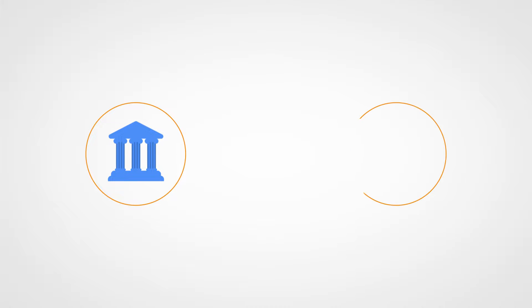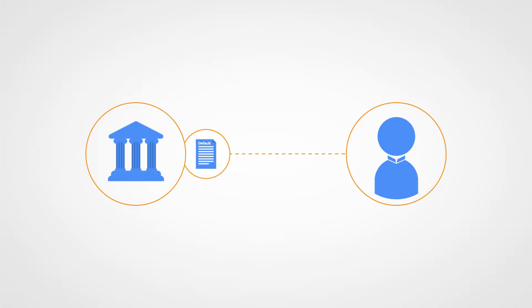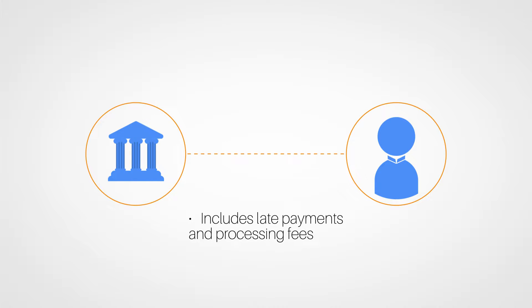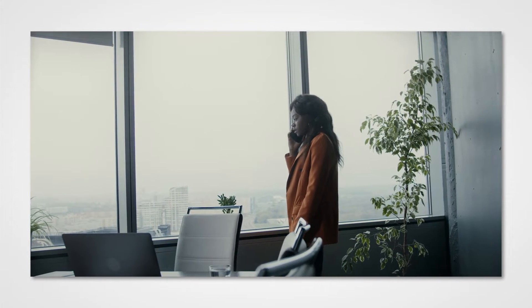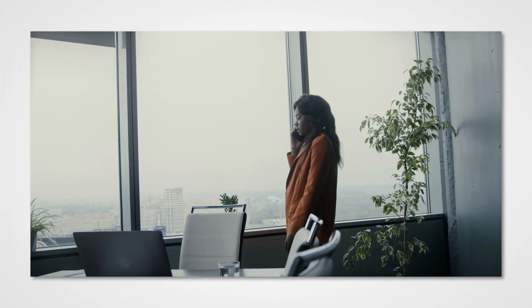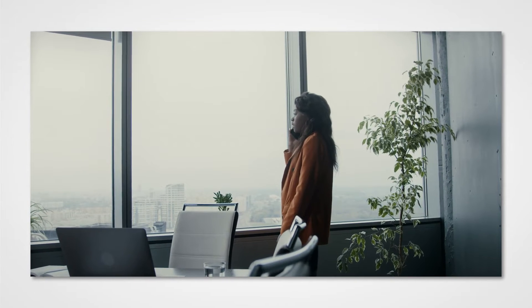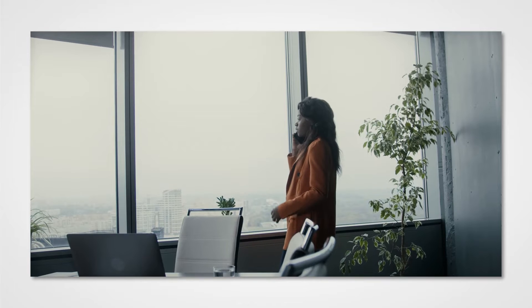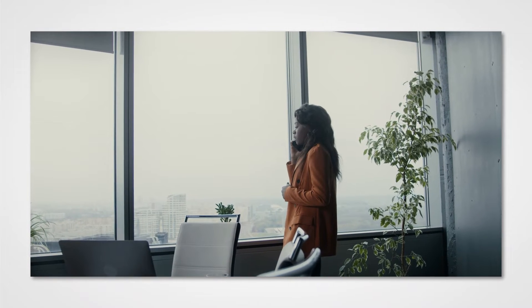Once default has occurred, a lender will send the borrower a notice of default. This is a legal notification that they failed to make the required payments and are in jeopardy of losing the property if full payment isn't made. That includes late payments and processing fees. The lender will request that the borrower contact them to discuss options and may begin additional collection efforts on the mortgage. Borrowers should take immediate action to contact the lender to try to work out a solution.